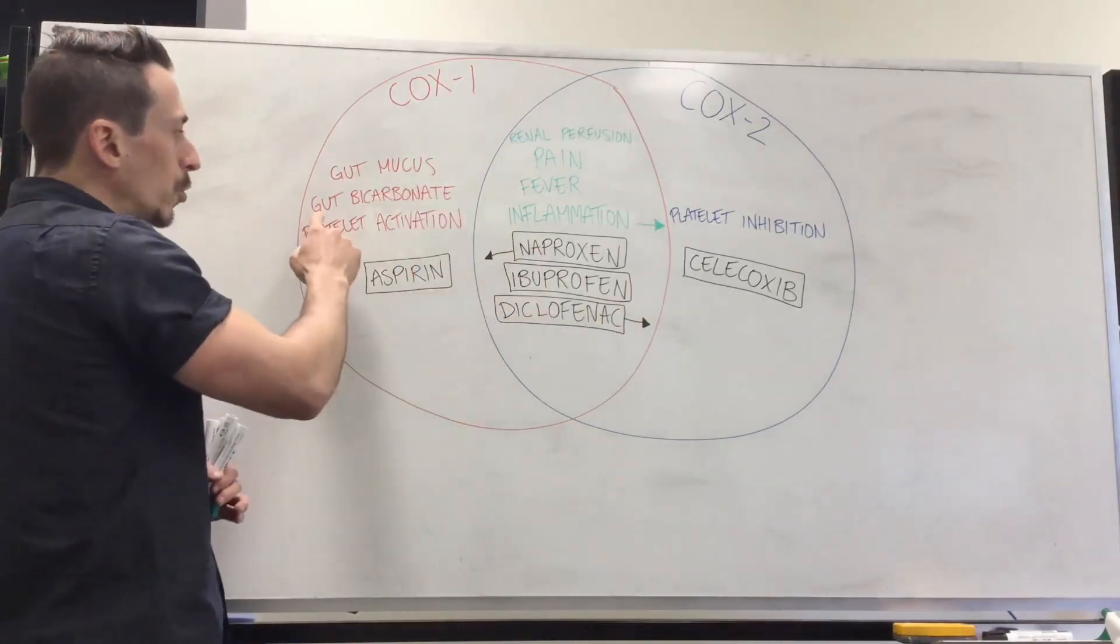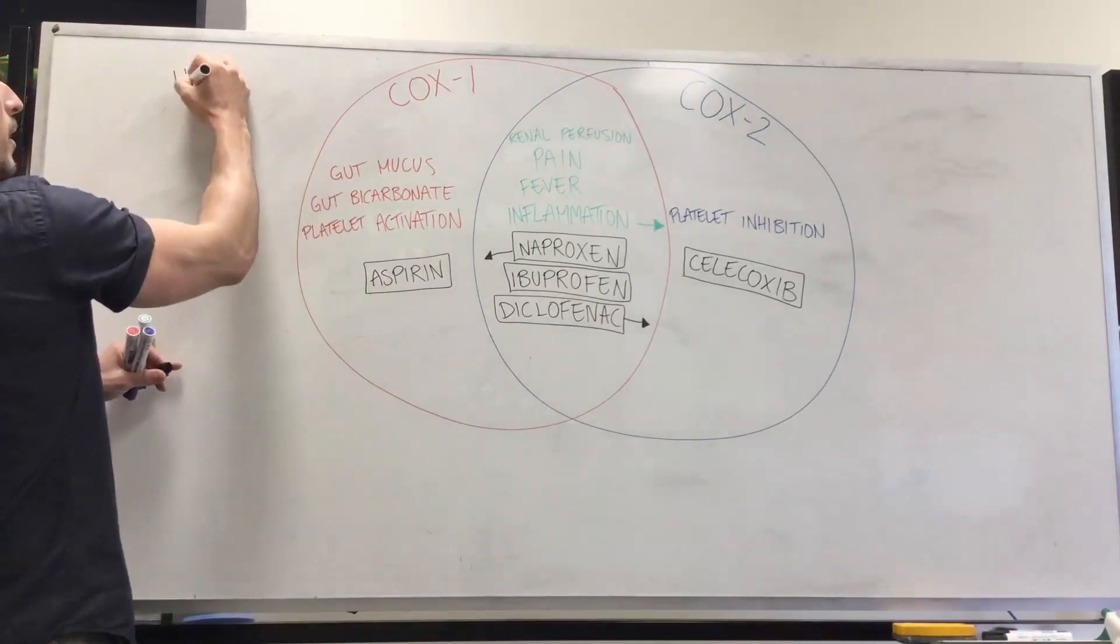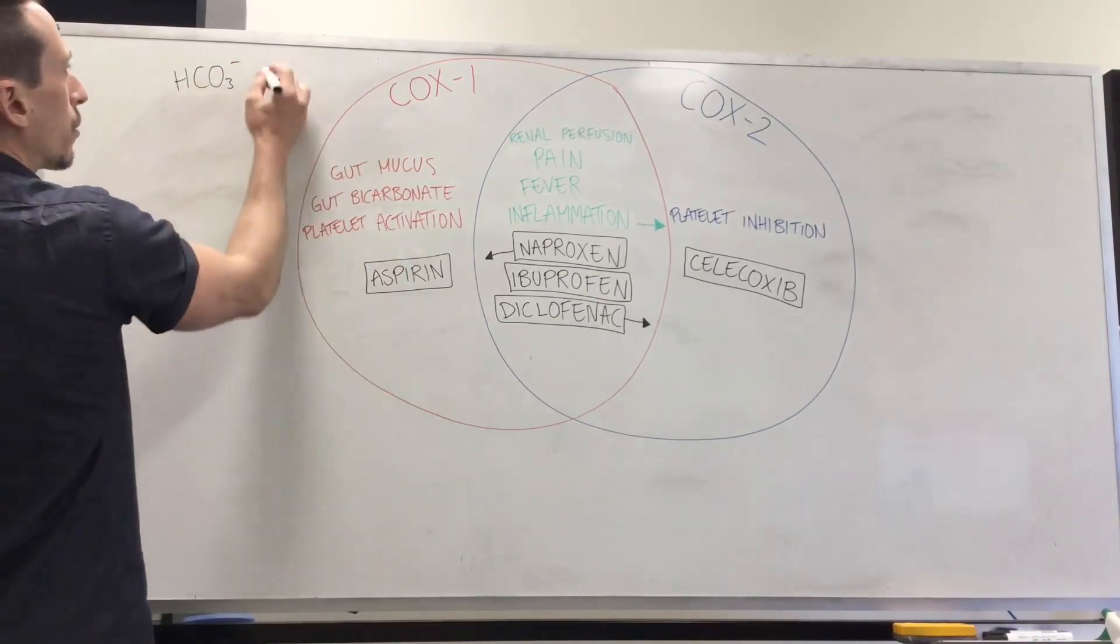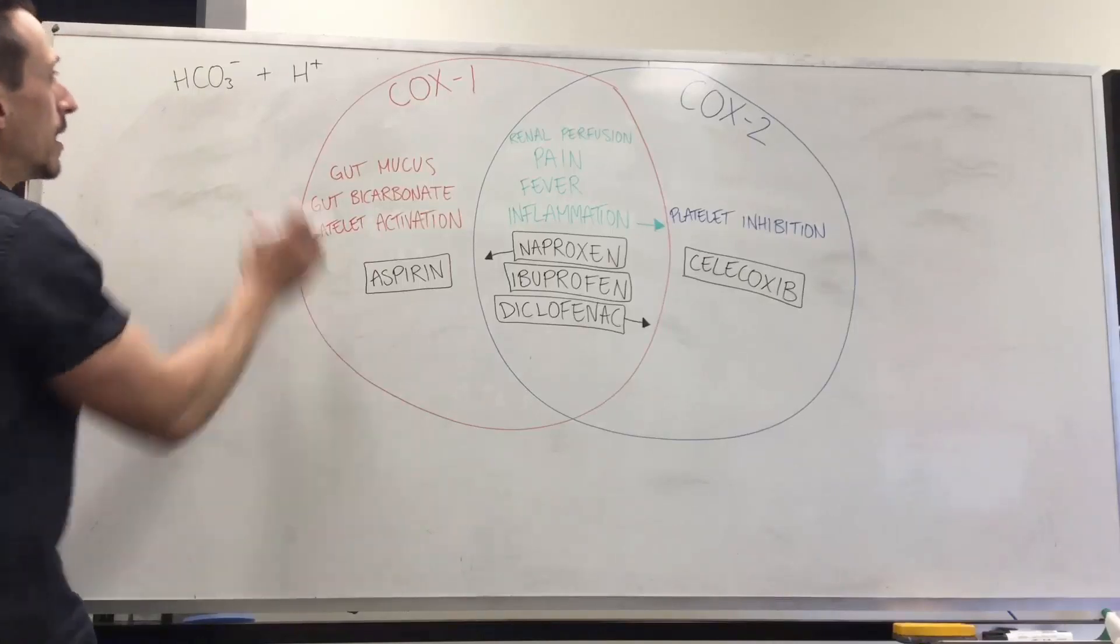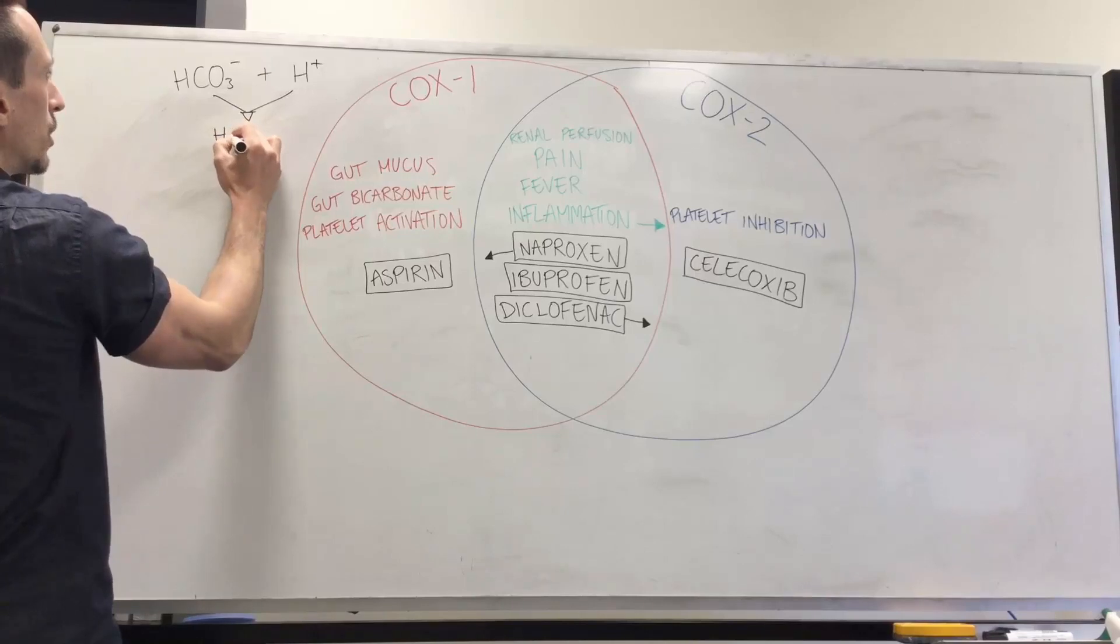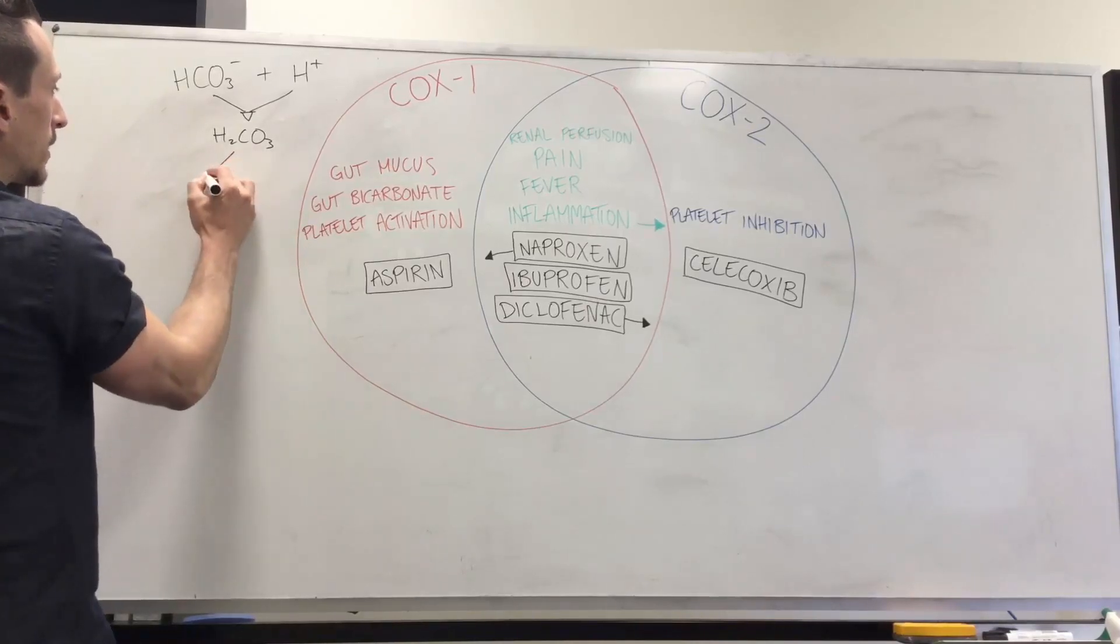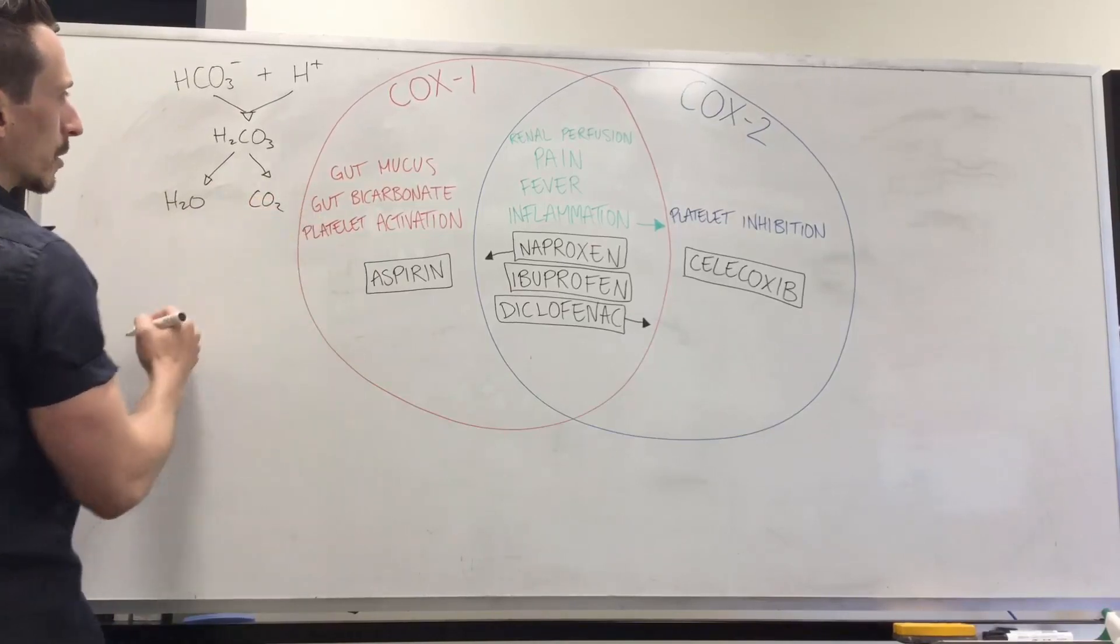The prostaglandins also help produce bicarbonate in the stomach. Now what's bicarbonate? Bicarbonate is a chemical, HCO3 negative. Why is that important? Well it's important because when HCO3 negative comes across acid, which is simply just H+, they bind together and what they produce is H2CO3, known as carbonic acid. What carbonic acid does is it splits itself apart and produces water and carbon dioxide.